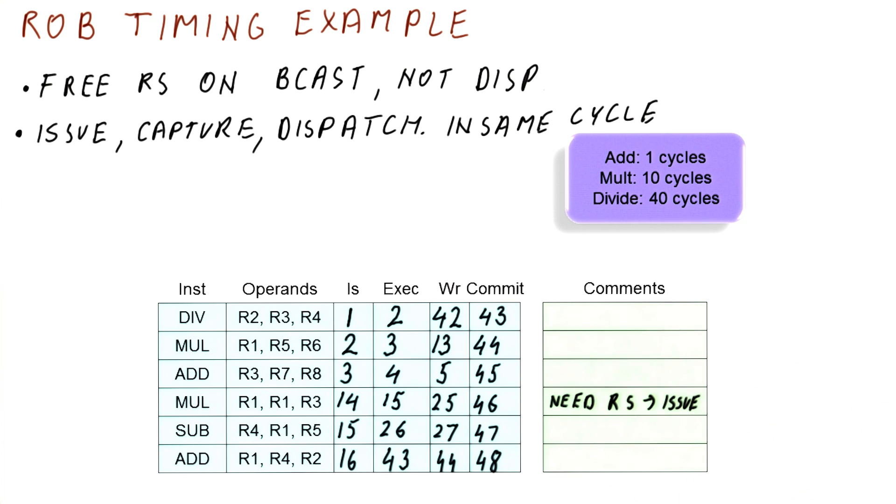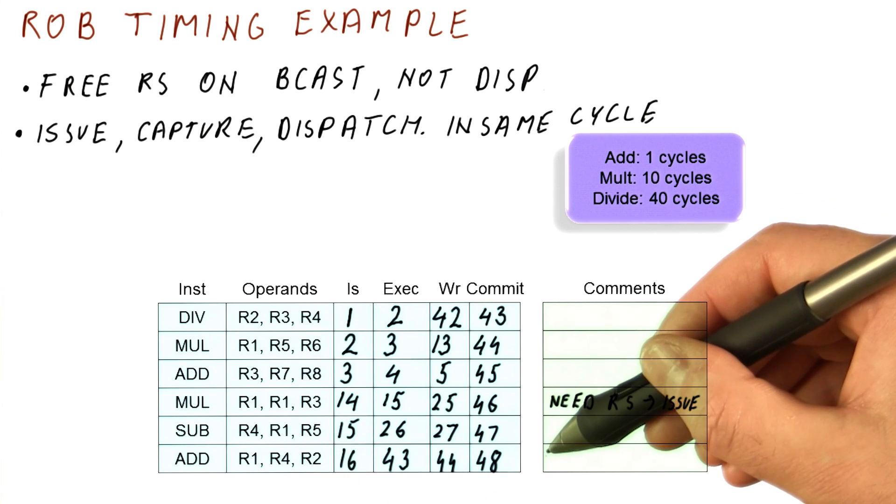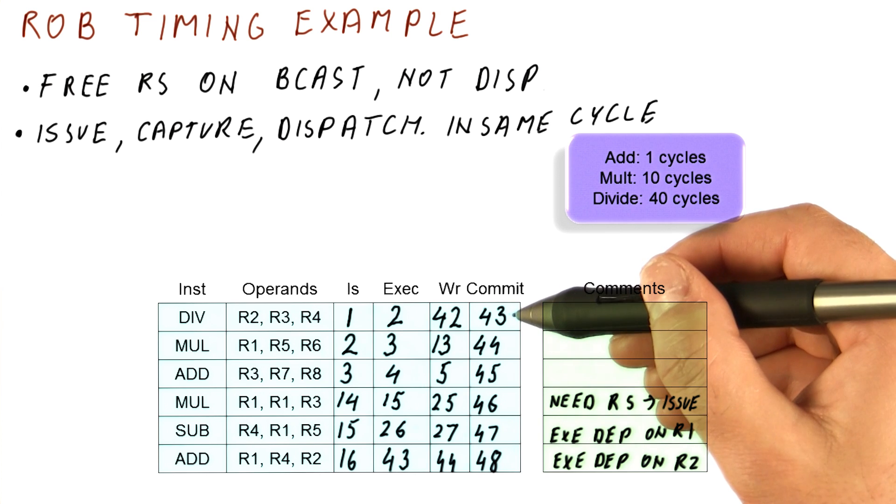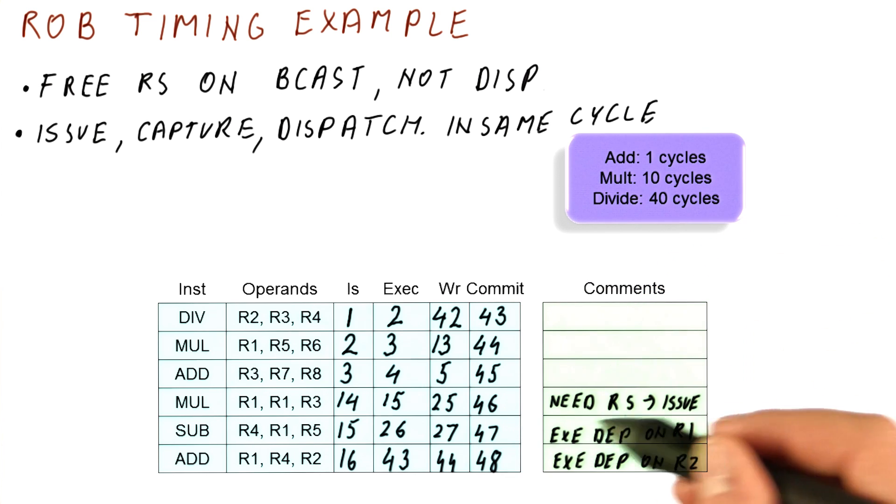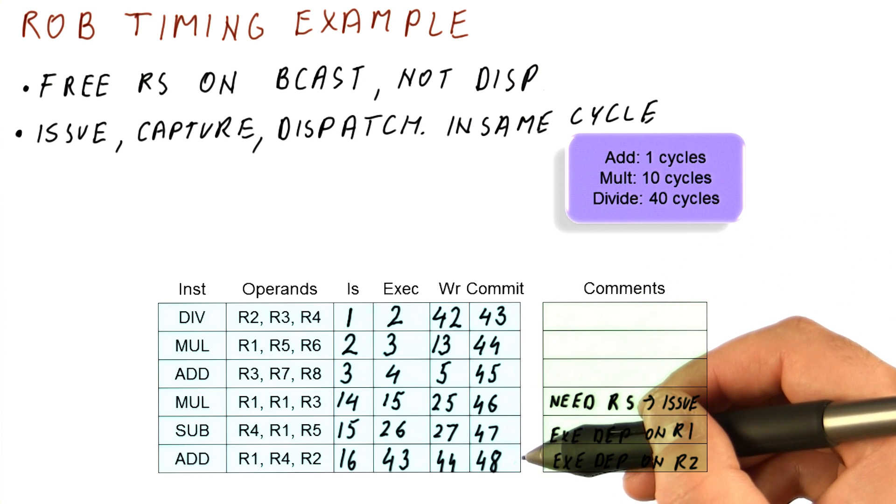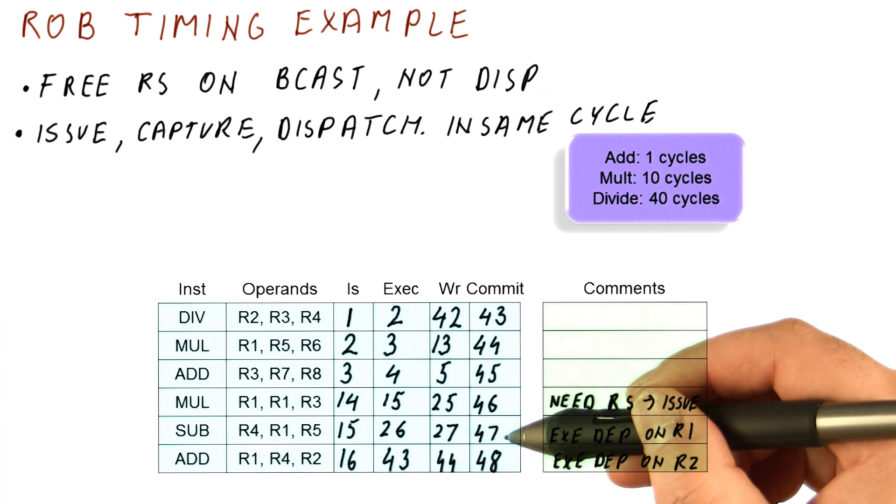And that concludes our discussion. Now here, you want to make a note, for example, that the issue has been delayed because of reservation stations. And for these instructions, for example, here, you may want to know that execution has been delayed because of R2. Just so that if you're on an exam or something, if you slightly messed this up, if you made these notes, at least whoever is grading this would be able to follow what went wrong and what was your real mistake and what was just a consequence of that mistake.